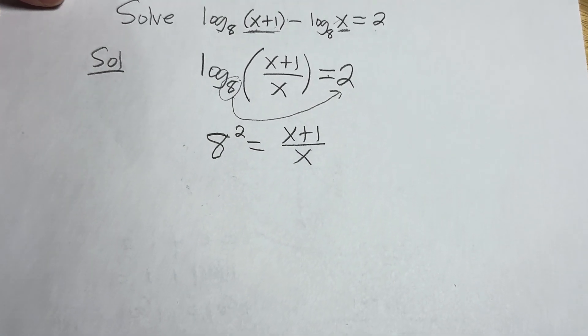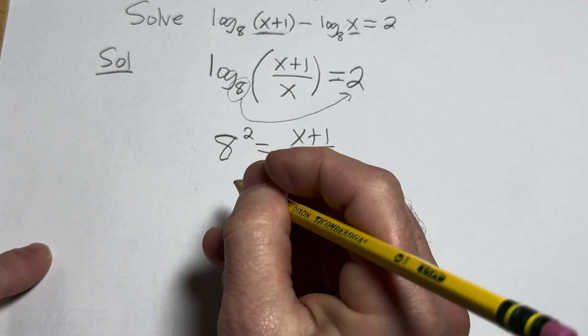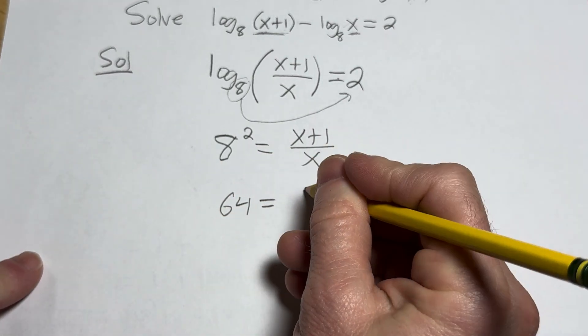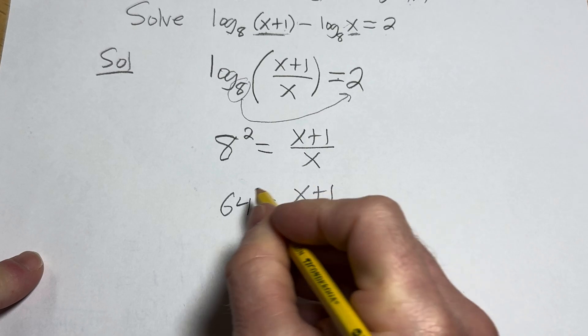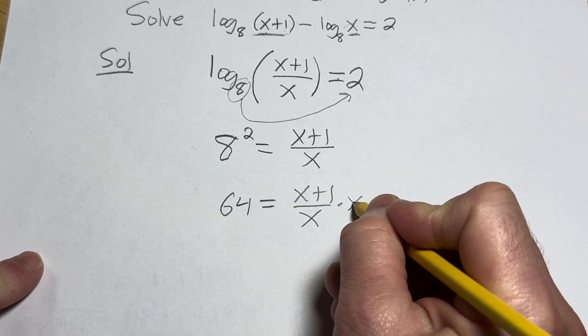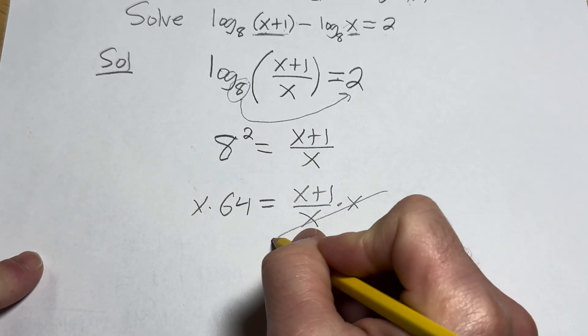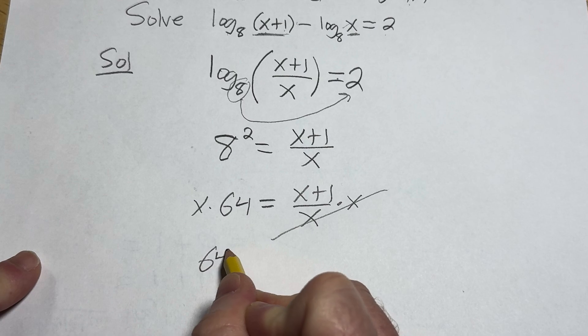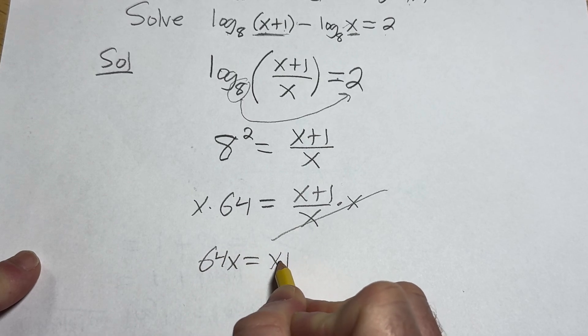We can simply keep going by working it out. So 8 squared is 64. So we have x plus 1 over x. Let's clear this fraction by multiplying both sides by x. So we have 64x equals x plus 1.